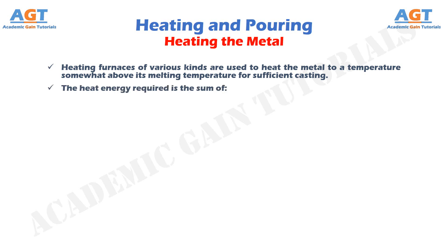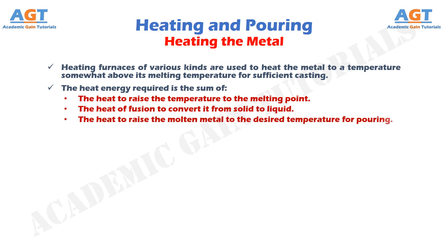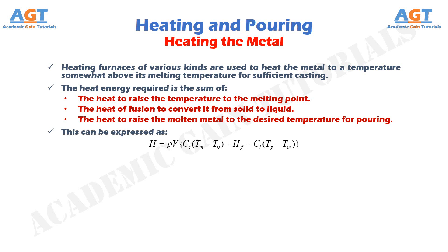The heat energy required is the sum of: the heat to raise the temperature to the melting point, the heat of fusion to convert it from solid to liquid, and the heat to raise the molten metal to the desired temperature for pouring. This can be expressed as: H = ρV × [Cs(Tm − T0) + Hf + Cl(Tp − Tm)].